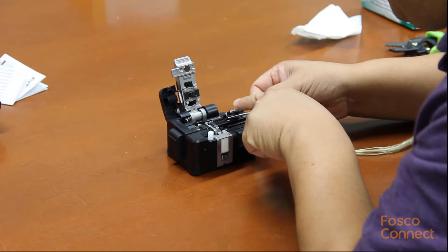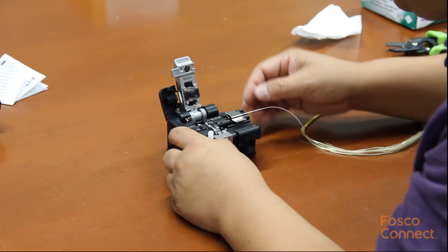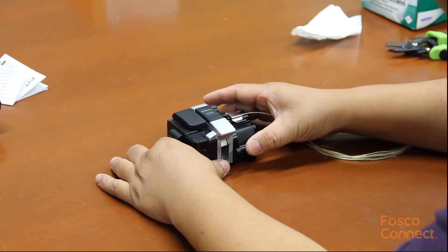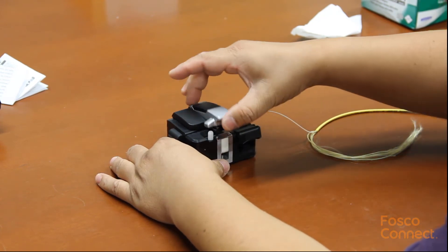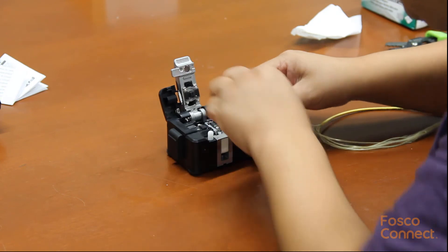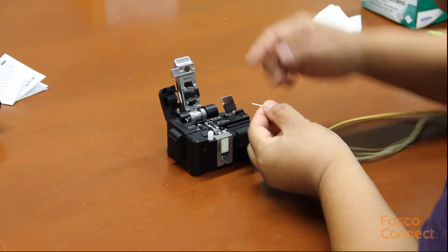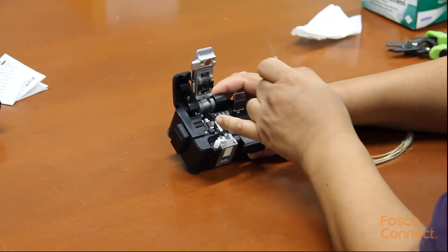Press down the fiber holder first, then push down the lid. Just one action. The fiber is cleaved and the fiber scrap is rolled into the fiber scrap collector.